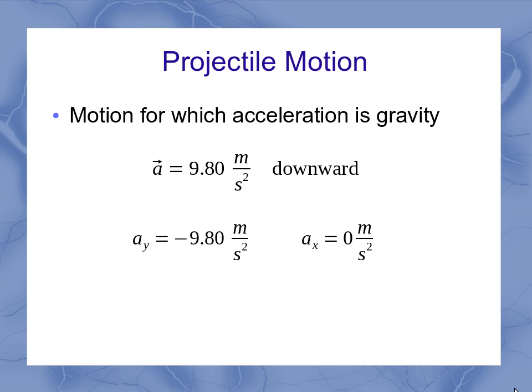So the y component is my negative 9.8 meters per second squared, and my x component is 0. Gravity only pulls downwards, so I only have an acceleration in the y component, no acceleration in the x component. So it's like freefall, but now we're doing our calculations in two-dimensional motion.